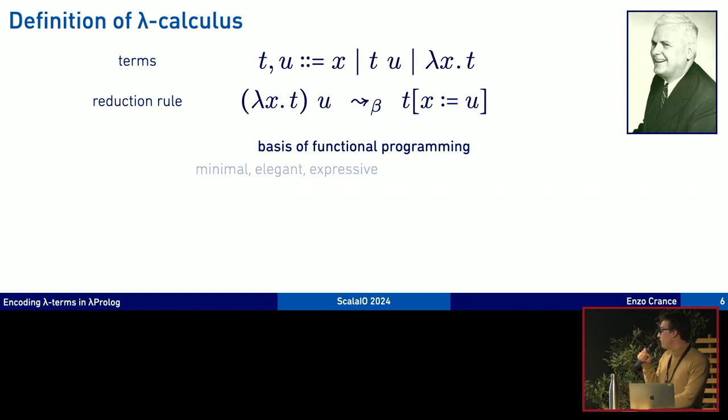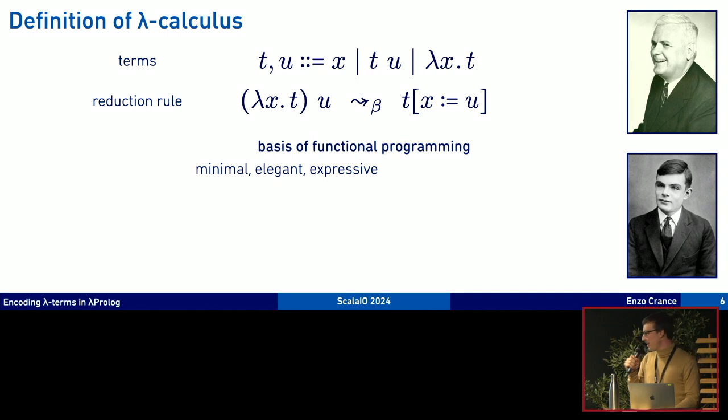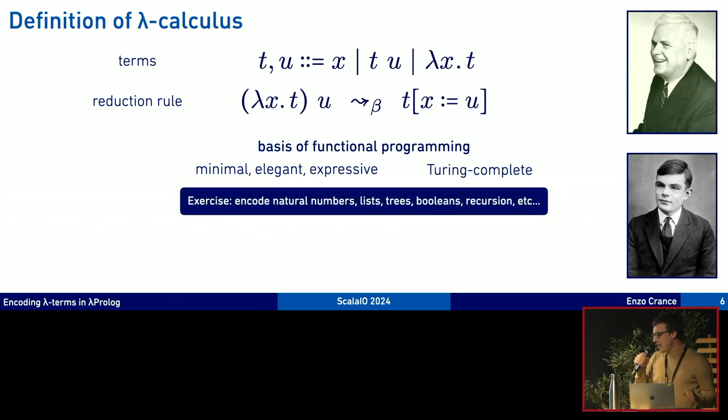This calculus is minimal, elegant, expressive, and very general. This guy you must know him, Alan Turing. He proved in his PhD thesis that lambda calculus is equivalent to a Turing machine, so it's Turing complete. And he was the student of Church above. As an exercise we can show that it's possible to encode natural numbers, lists, booleans, general recursion with that kind of language. It's minimal but very expressive.